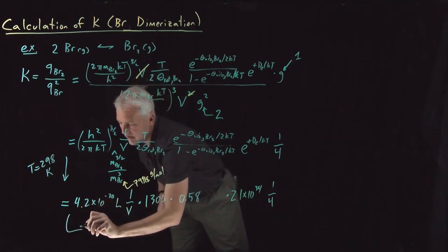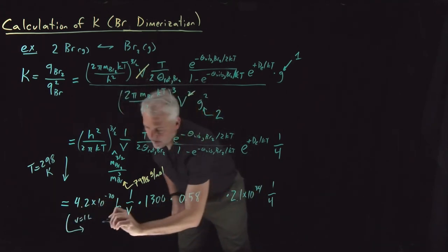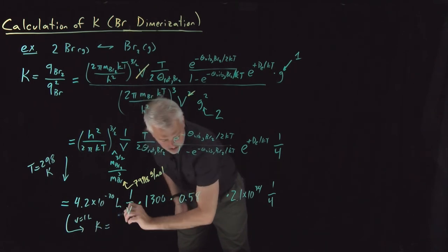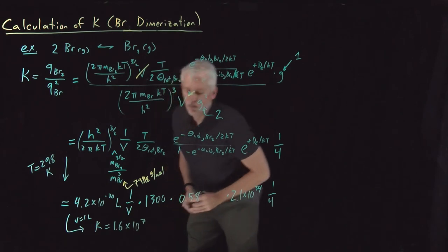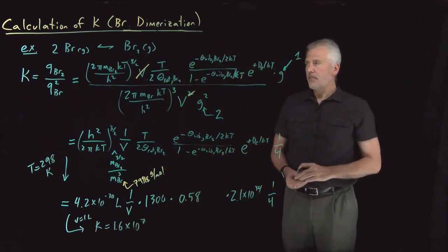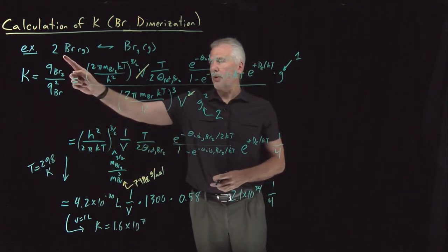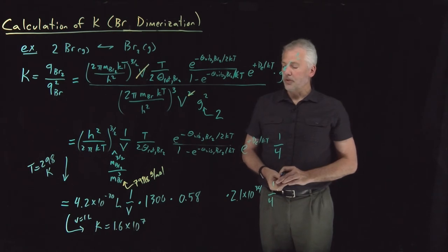In fact, if we do that, if we say volume equals 1 liter, then the value of the equilibrium constant that we get is now a unitless 1.6 times 10 to the 7th, strongly towards product. Bromine, not surprising perhaps that bromine atoms will strongly prefer to dimerize and form Br₂ molecules.